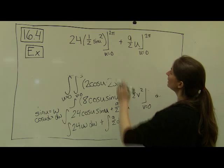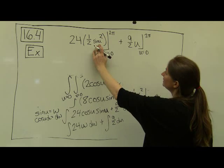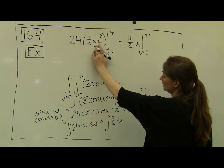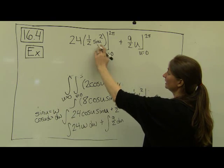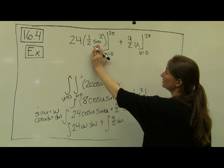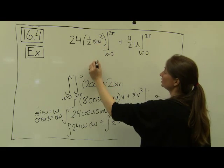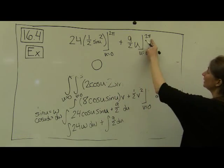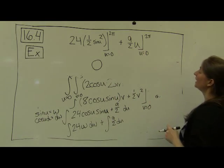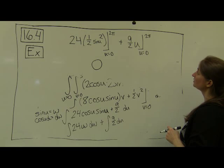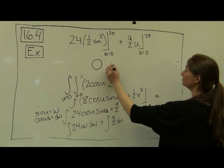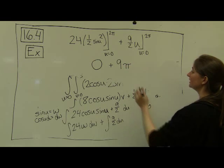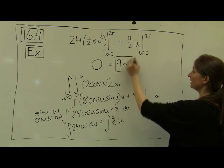So now when I plug in 2 pi, the sine of 2 pi is actually just 0, which is really boring. And the sine of 0 is also equal to 0. So this term all just turns out to be 0. This term, when I evaluate u equal to 2 pi, I get 9 halves of 2 pi, which is equal to 9 pi, minus 0. And my final answer is just 9 pi.